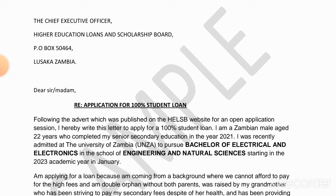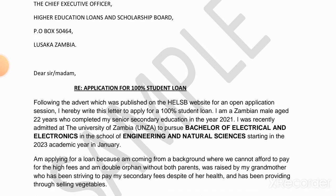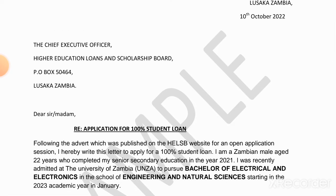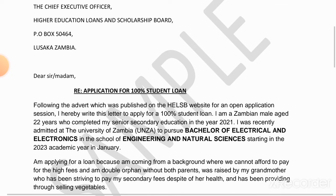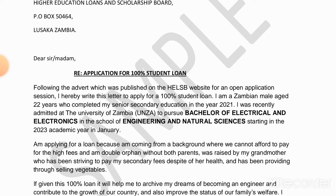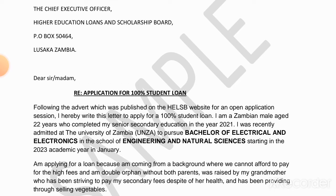After the reference, the first paragraph must contain information about you — who is writing the application. You must write where you saw the advert, since the application letter should be responding to the advert. For example: 'Following the advert which was published on the Higher Education Loans and Scholarship Board website for an open application session, I hereby write this letter to apply for a 100% student loan.'